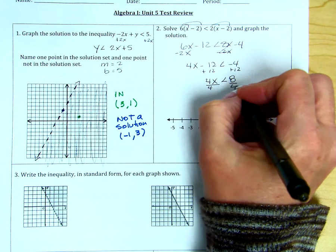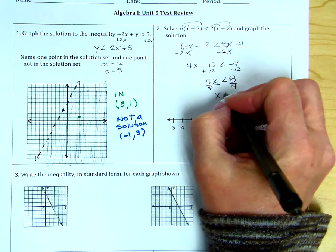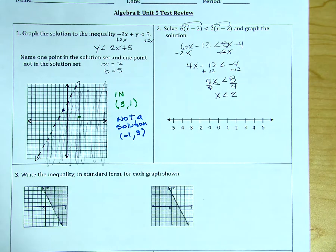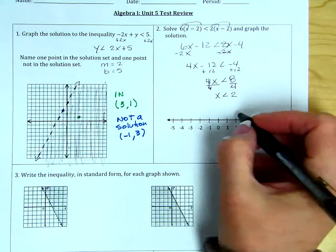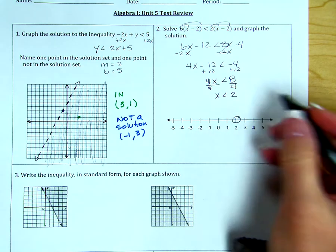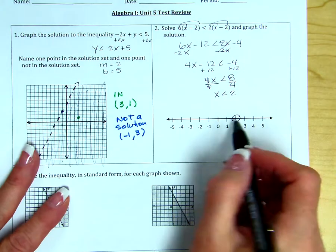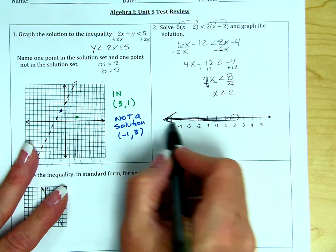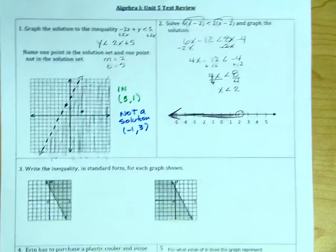Divide by 4. Because I'm dividing by positive 4, I do not have to change the symbol. x is less than 2 is the solution that we came up with. To graph that, we put an open circle at 2 because this is strictly less than. And we then shade to the left because towards the left is where the smaller numbers are.